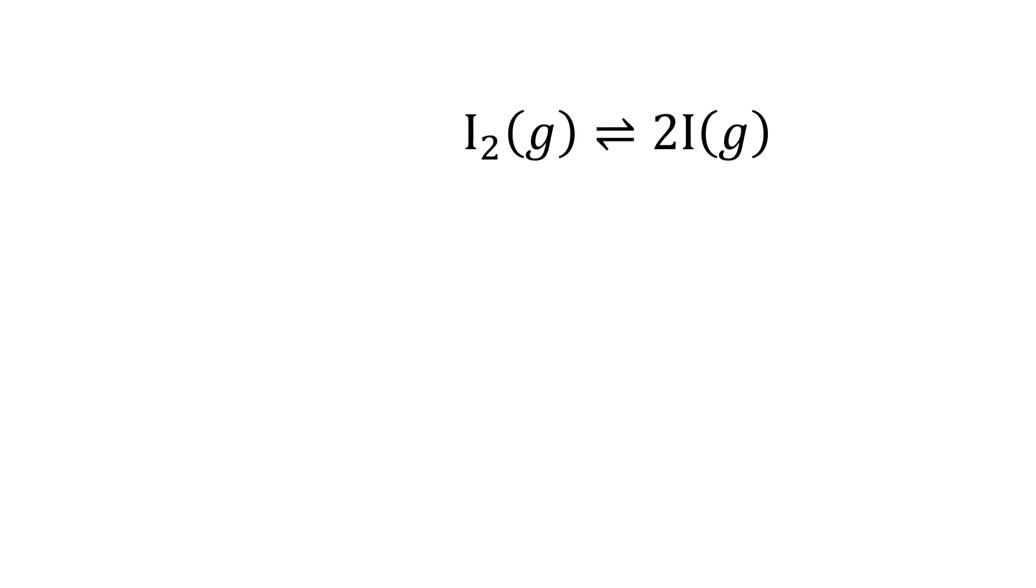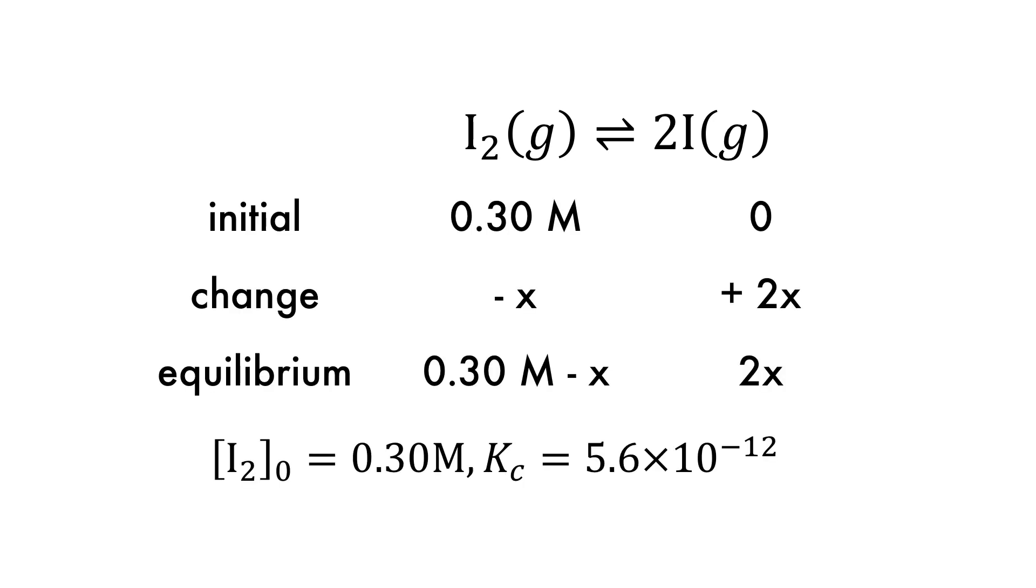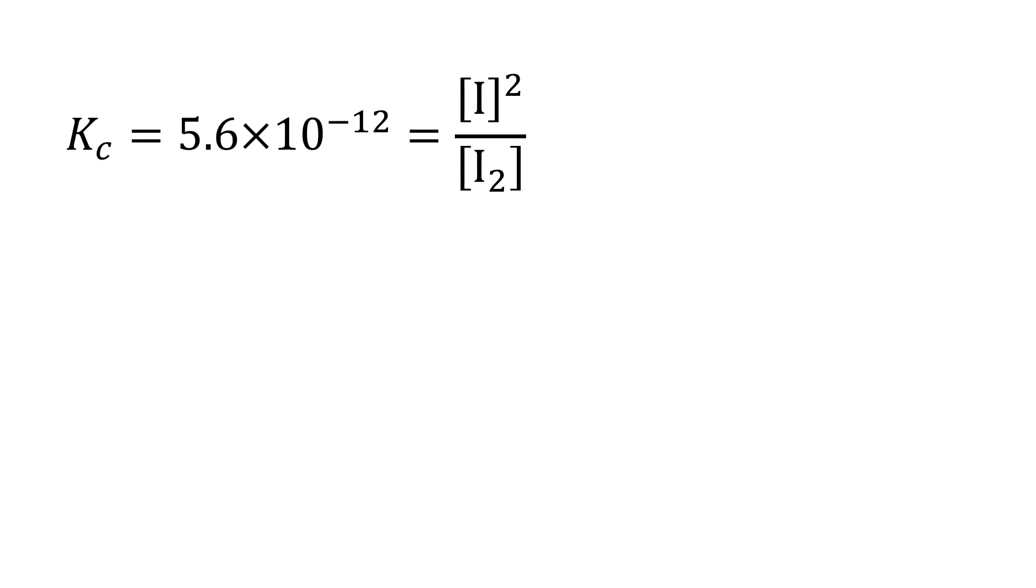Sometimes, when the value of Kc is very low, quadratic equations can be avoided, such as in the case of the equilibrium between the iodine molecule and dissociated atoms. Once again, solving the equilibrium expression would result in a quadratic equation. This, of course, can be solved in the usual way, but because the value of Kc is very small,